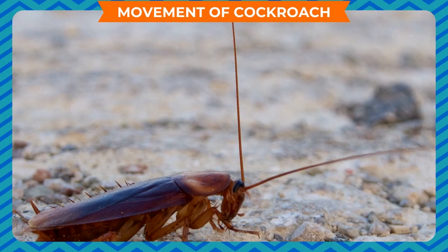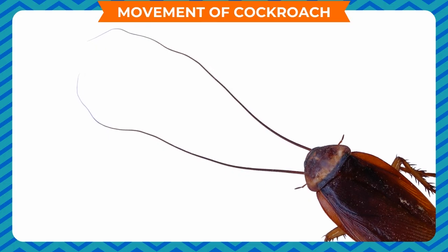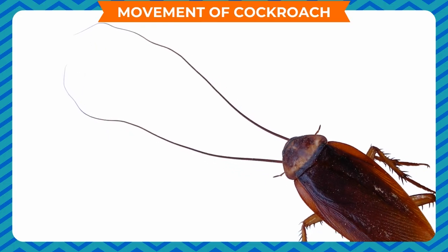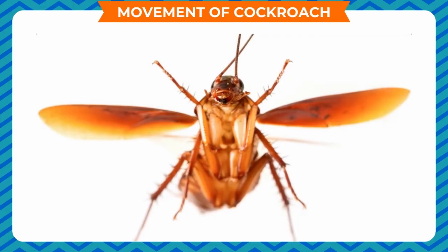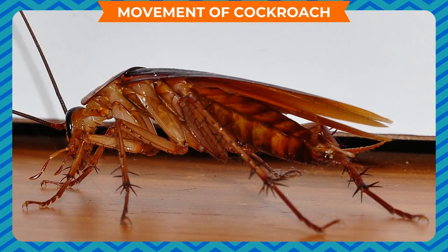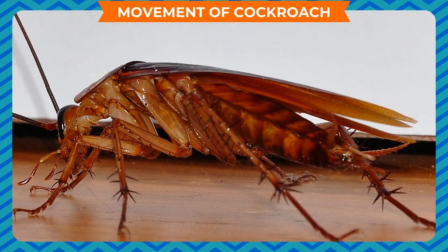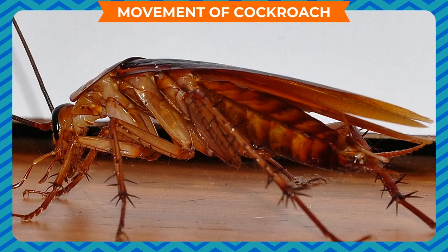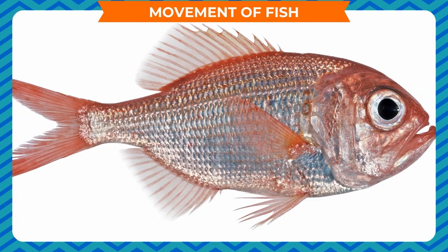Movement of cockroach: Cockroaches have a pair of antennae that help them to smell. They also have a pair of cerci that can detect the slightest movement and warn them of danger from behind. They have two pairs of wings using which they can fly over only short distances. However, they are able to run and climb very fast across a variety of surfaces.